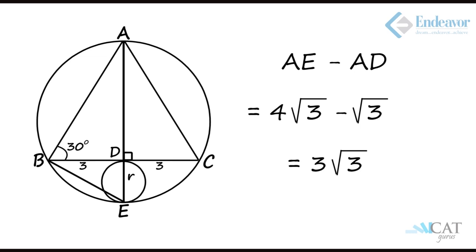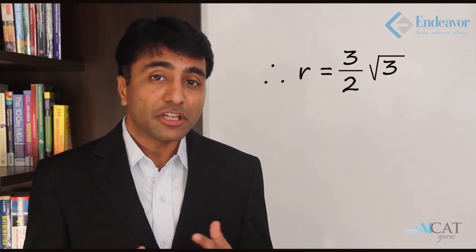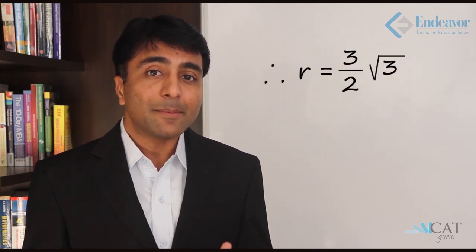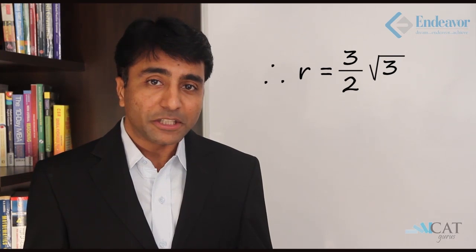If we subtract 4 root 3 and root 3 we get 3 root 3, which will be the diameter of the smaller circle. We were supposed to find the radius of the smaller circle, so that will be half of 3 root 3, which is 3 over 2 times root 3.